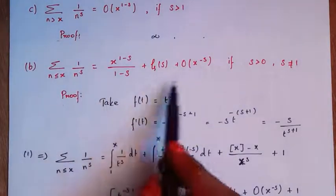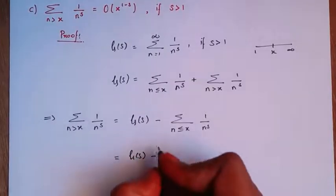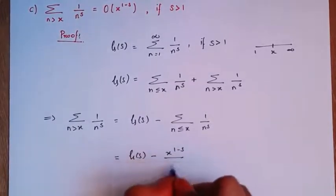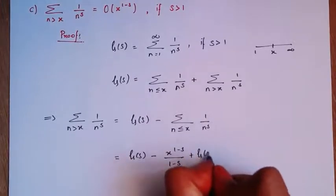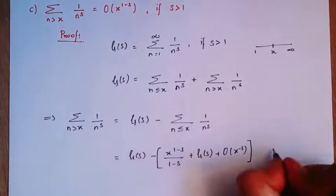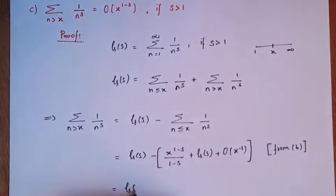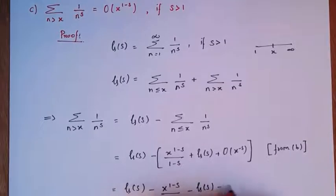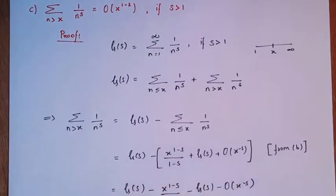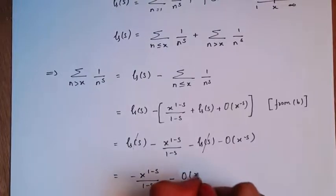Now substituting the Part B result: we get zeta(s) minus [x^(1-s)/(1-s) + zeta(s) + big O(x^(-s))], which equals zeta(s) minus x^(1-s)/(1-s) minus zeta(s) minus big O(x^(-s)). Here zeta(s) and zeta(s) cancel, leaving minus x^(1-s)/(1-s) minus big O(x^(-s)).